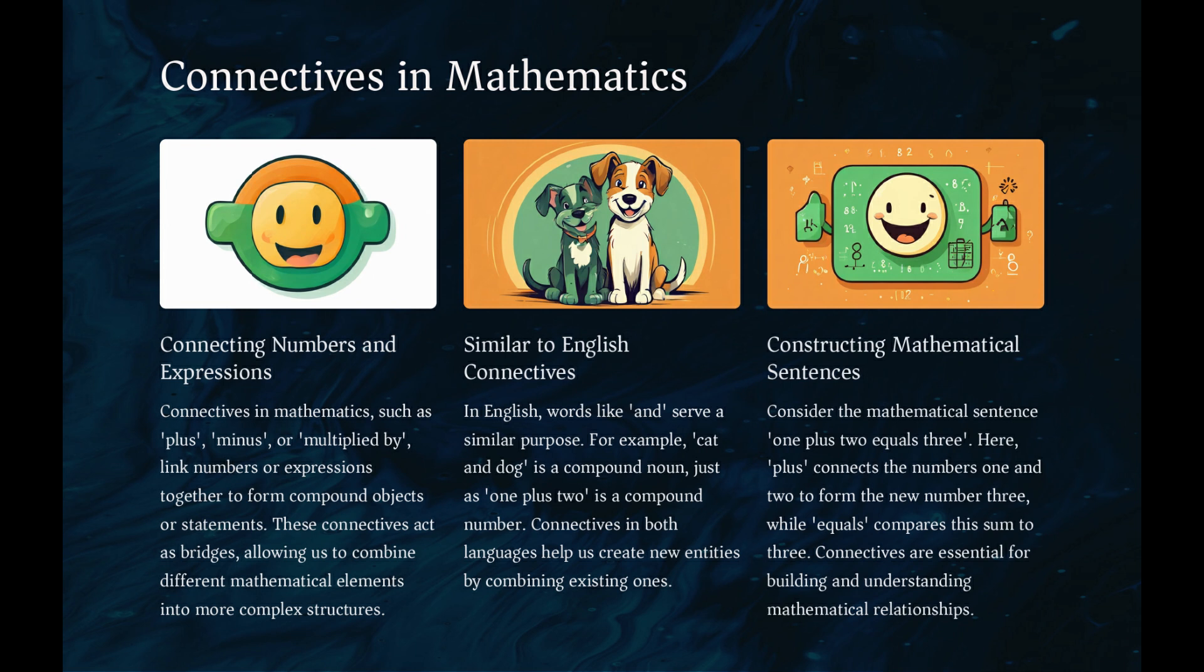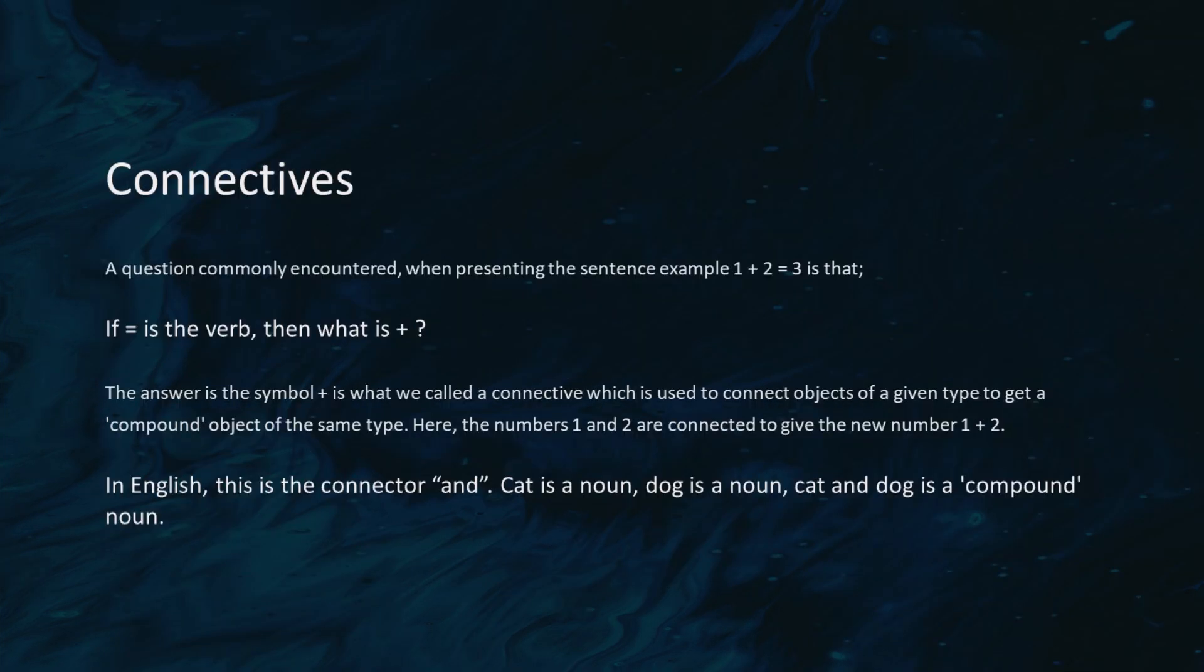For example, cat and dog is a compound noun just as 1 plus 2 is a compound number.